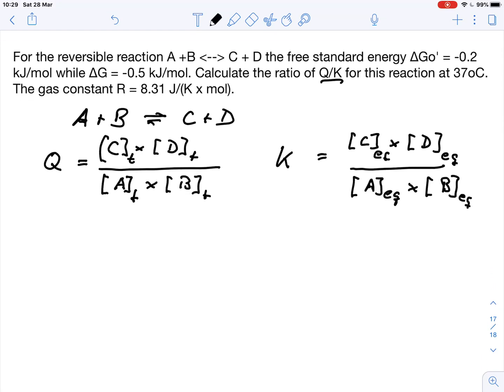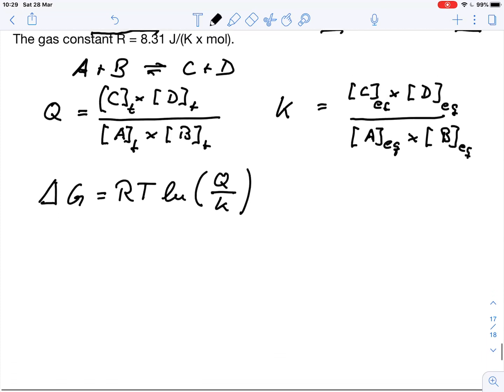We know that the equation for that would be delta G equals RT ln(Q over K), and that is the displacement factor Q over K. We have been given delta G, this one here. We have R, we have T at 37 degrees, so we can easily calculate that.